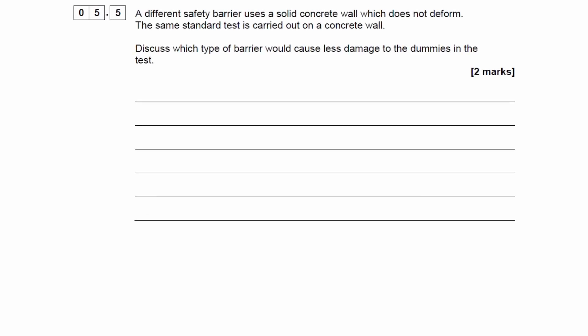For the final part of this question, a different safety barrier uses a solid concrete wall which does not deform. The same standard test is carried out on a concrete wall. Discuss which type of barrier will cause less damage to the dummies in the test. To have less damage to the dummies in the test, the force that they experience has to go down.